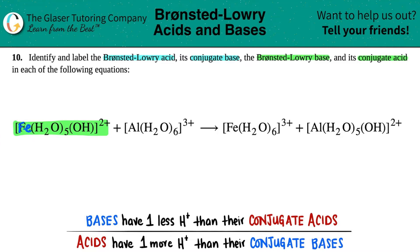This one has the iron in it — the Fe. So I go to the product side and ask which one has the Fe. That's the corresponding pair, and I'm going to put that in green. On the flip side, the other pair should make sense: this one has aluminum in it — Al(H2O)6 3+ — and yeah, this one has aluminum in it as well. So we picked right.